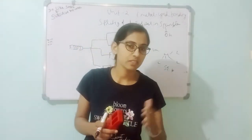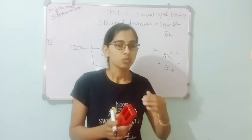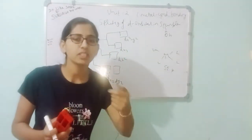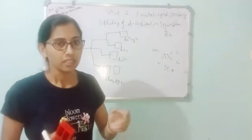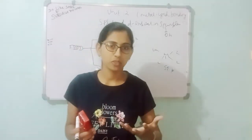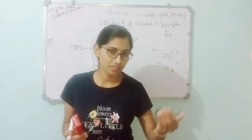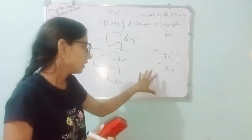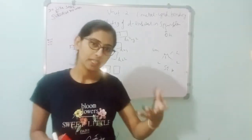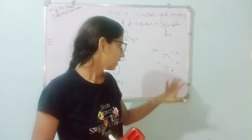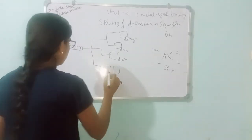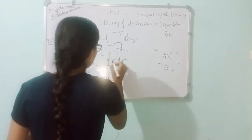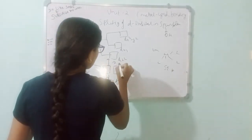Now you need to know the numerical values for the splitting in square planar complex, which you may need for 12th grade or BSc level exams. The value is 0.086 delta.